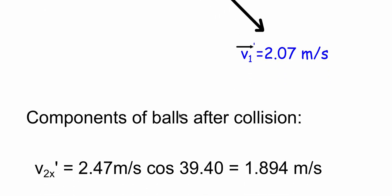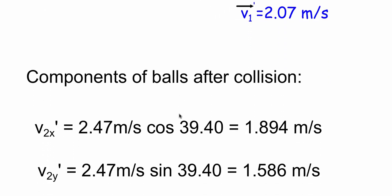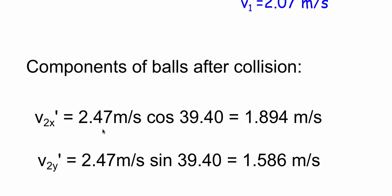So we're going to look at components of the ball two or the billiard ball. We know that it's going at an angle of 39.4 degrees, so to find the x component it's 2.47 meters per second times the cos of the angle, giving us a velocity of 1.894 meters per second.